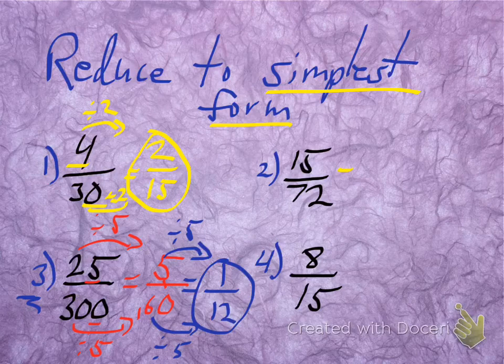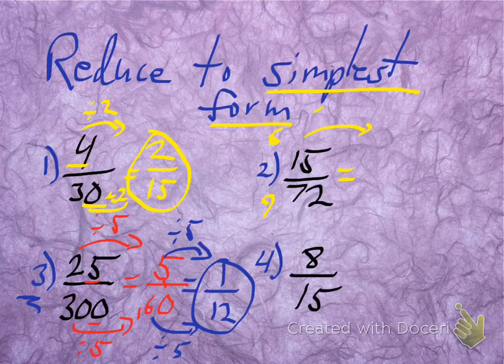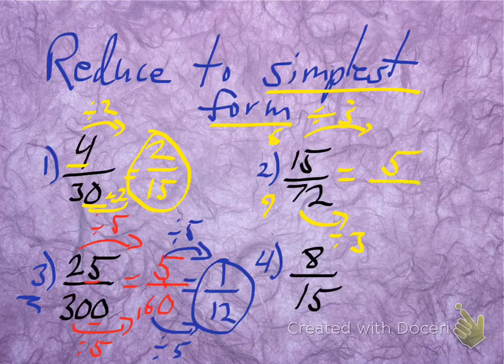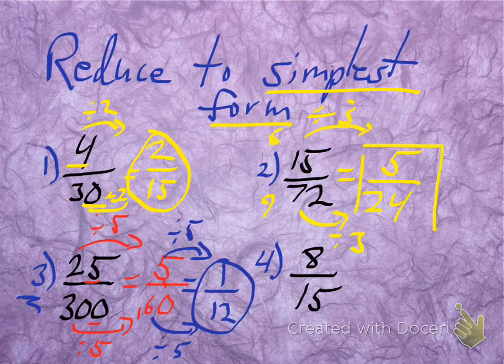The next one is trickier. They're not both even, so not divisible by 2. But if I look more closely, 1 plus 5 adds up to 6, and 7 plus 2 adds up to 9, which means both numbers are divisible by 3, so I can take out a 3. Notice how I'm using divisibility rules to simplify these. Let's divide by 3. The top is easy: 15 divided by 3 is 5. The bottom is harder: 72 divided by 3 is 24. Five and 24, there's no more common factors, so we're done.